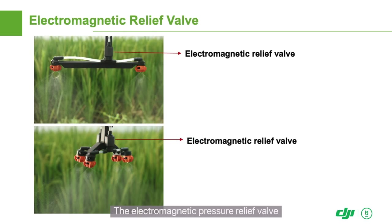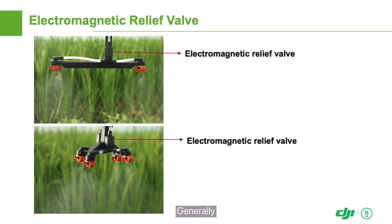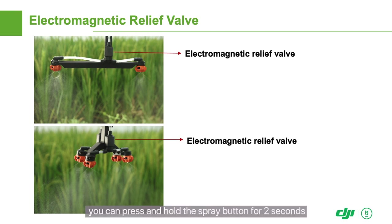The electromagnetic pressure relief valve is a component that opens and closes each nozzle. You can press and hold the spray button for two seconds to discharge the air before the operation.